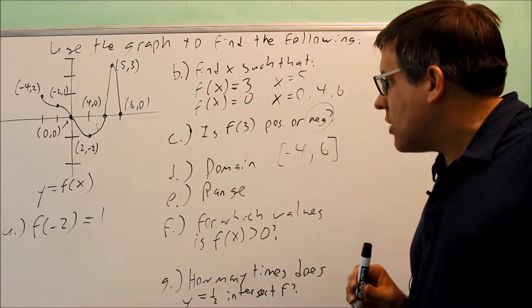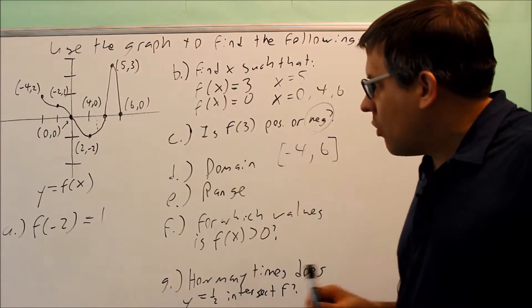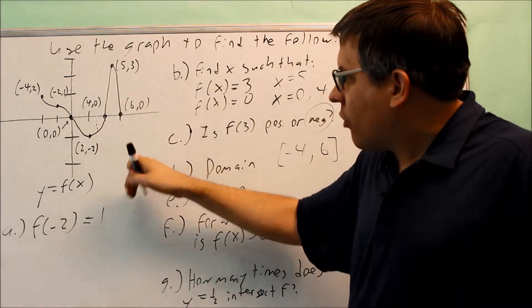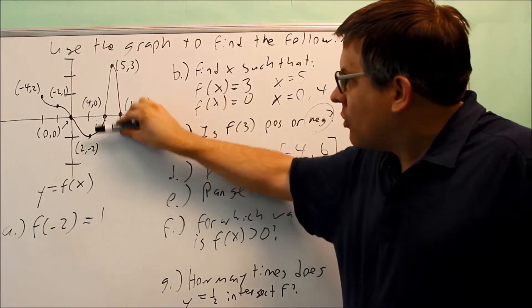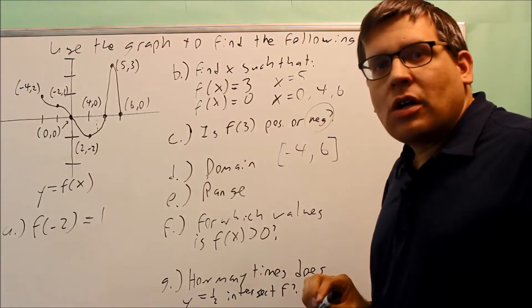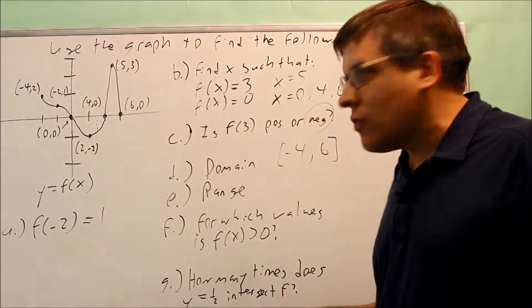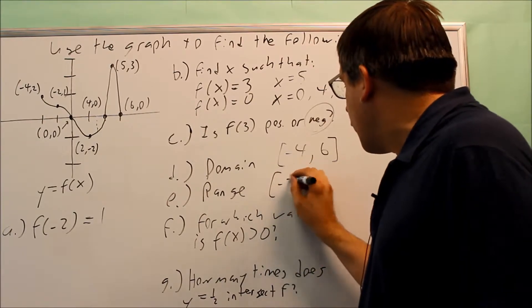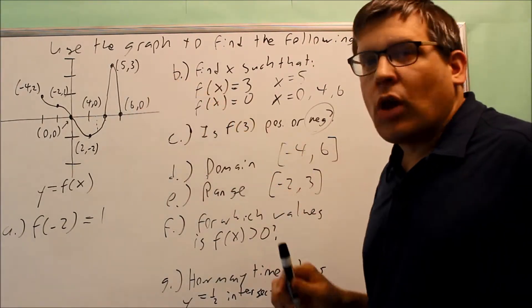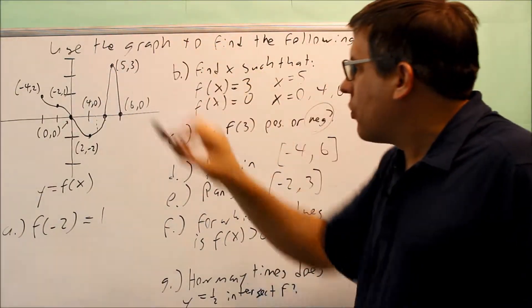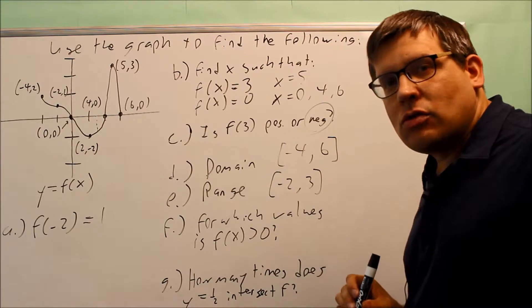For range, that's talking about the y values that the graph is using. The lowest y value on the graph is -2. The highest one that's used is 3. There's no part of the graph that goes below -2, so the range is from -2 to 3. 3 is the highest y value; there's no more graph above 3. So the values used are only between -2 and 3.